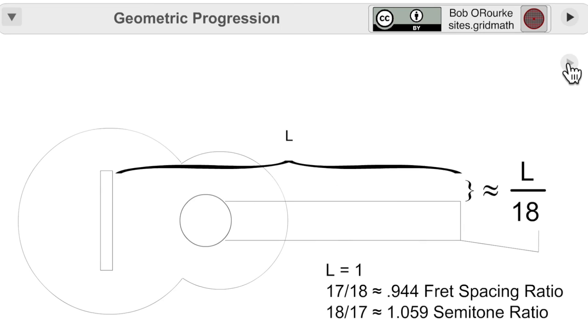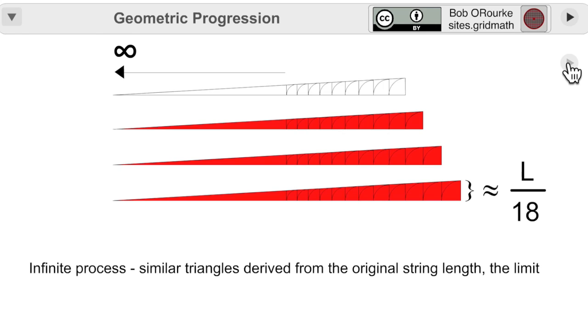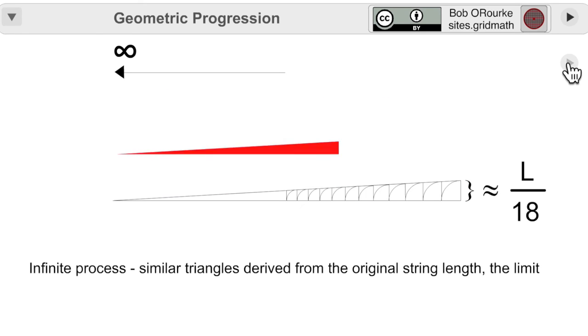Zeno describes the race with a generalized geometric ratio as something like the fret spacing on an equal tempered guitar. Here the ratio continuously shortens the string length by a percentage at each repetition. There's always a remainder length by the definition of the procedure.